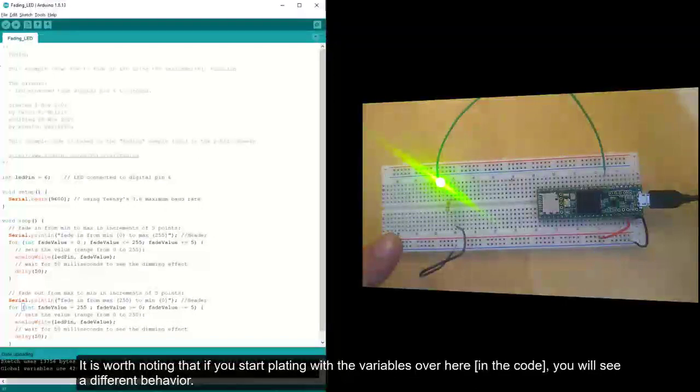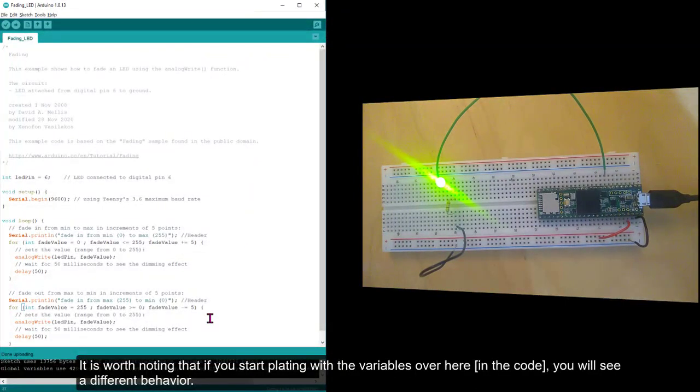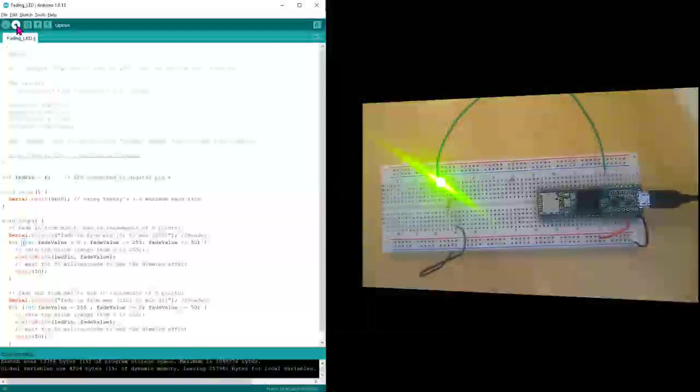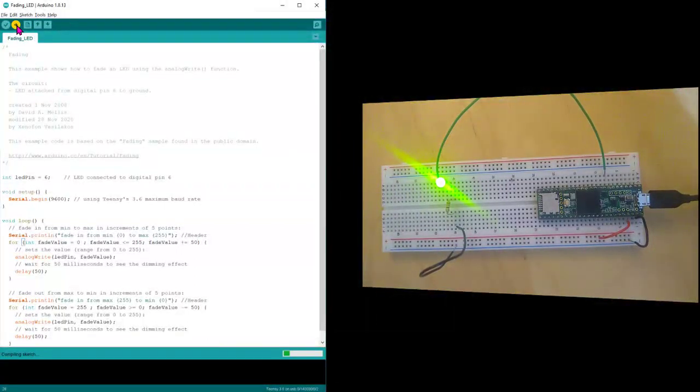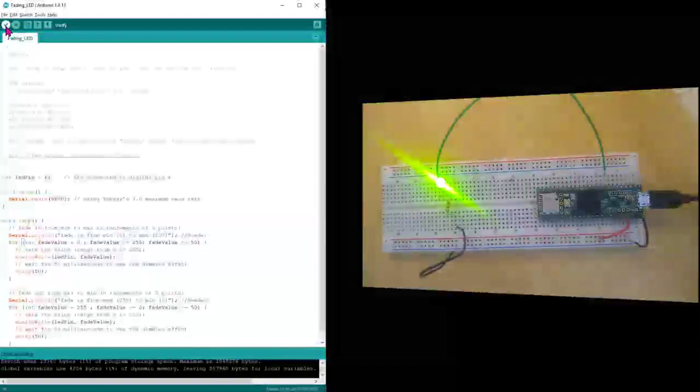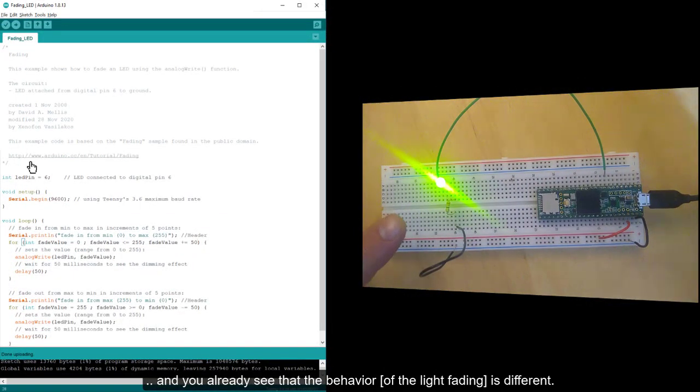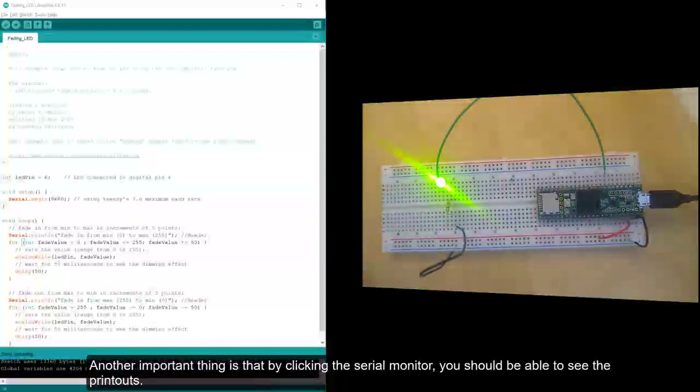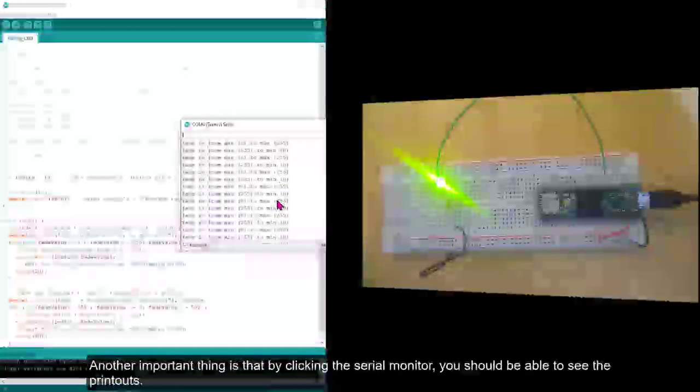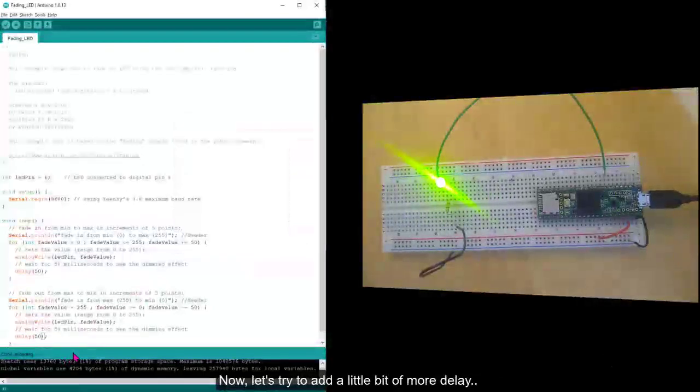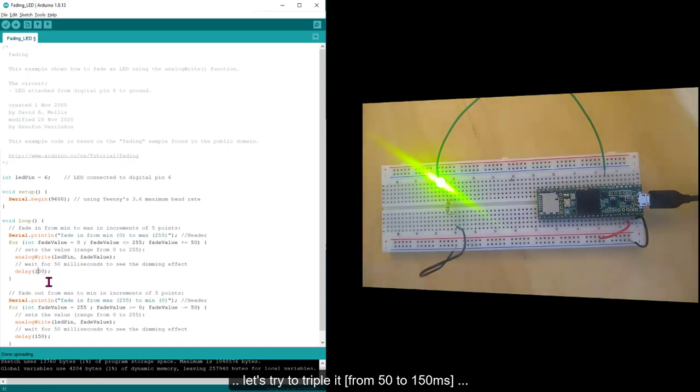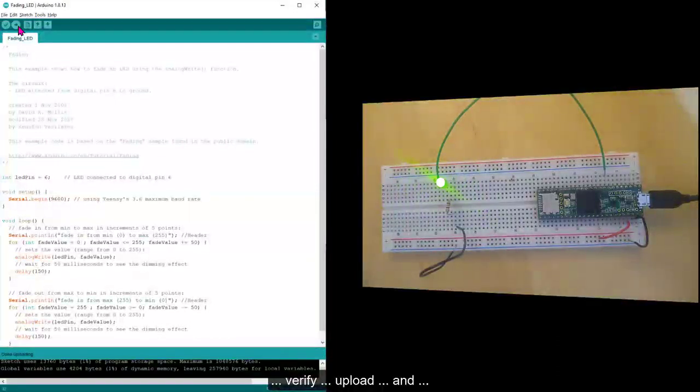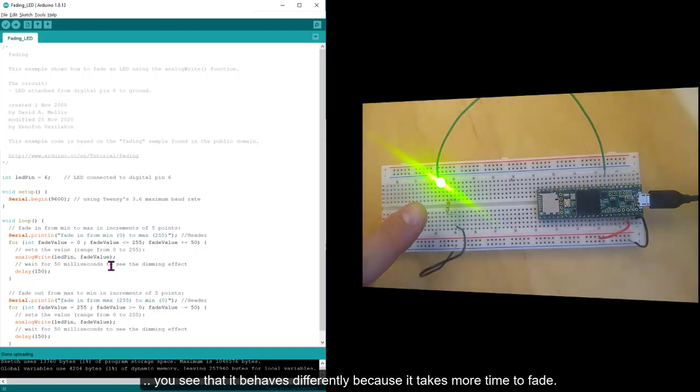Now, it is worth noting that if you start playing with the variables over here, you will see a different behavior. Let's turn the step from 5 to 50. And you already see that the behavior is different. Now, another important thing is that by clicking the serial monitor, you should be able to see the printouts. Now, let's try to add a little bit of more delay. Let's try to triple it.